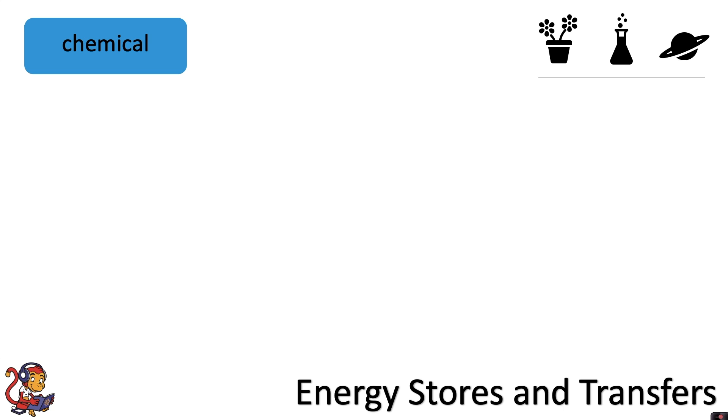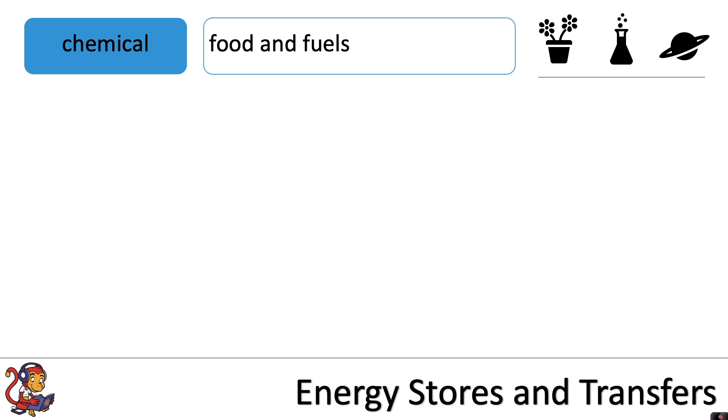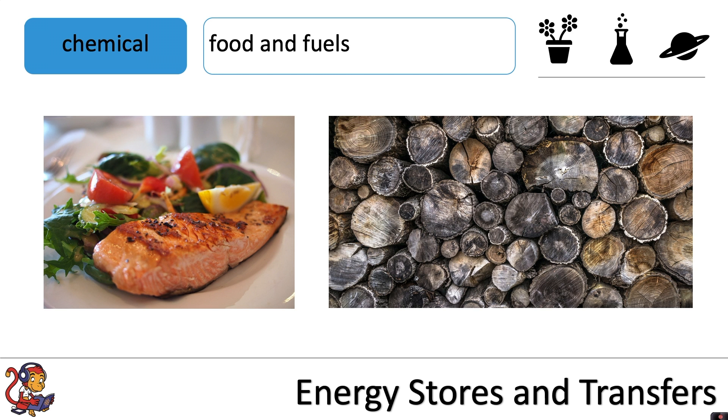The first type of energy store that we'll look at is chemical energy, and chemical energy is stored in food and fuels.